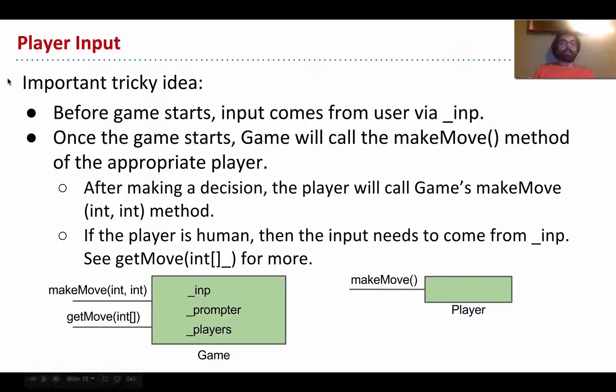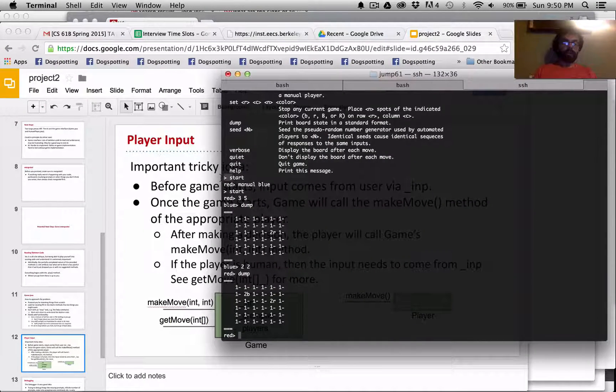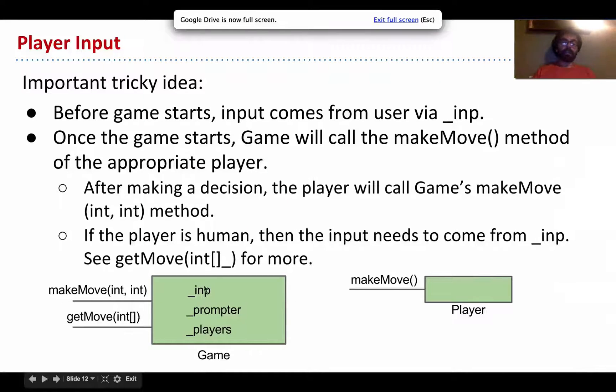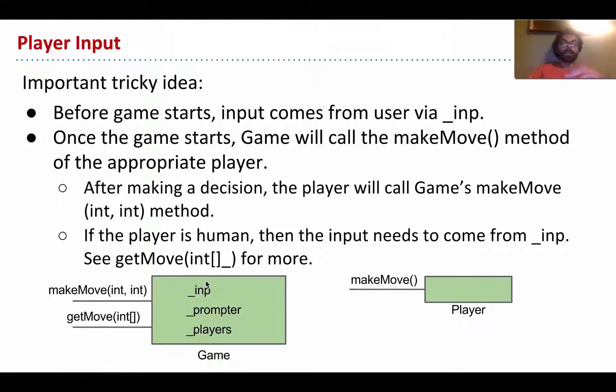So, one important tricky idea is that before a game starts, that is, before someone types start, you'll notice that I have a prompt with no particular color, but then after I've typed start, I get prompts with a certain color. So, before a game starts, our game class here, it has a bunch of instance variables, one of which is called imp. An imp is a connection to the outside world that allows you to use all your familiar, it's a scanner, and it allows you to use all your familiar scanning, scanner methods that you've seen in jump61. So, you can say next, nextint, hasnext, hasnextint, and so forth.